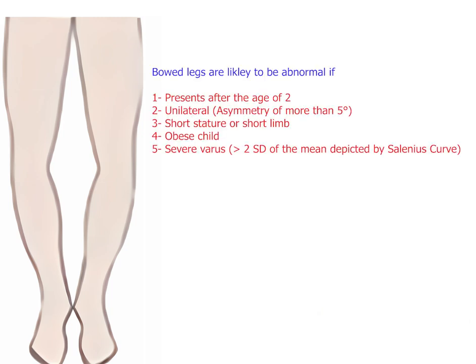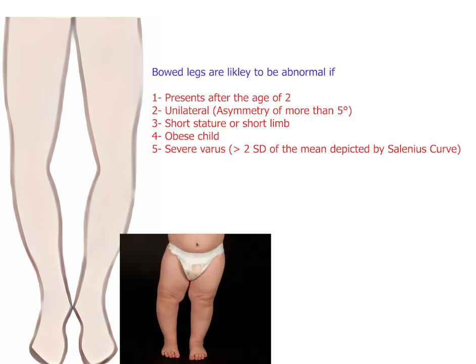The question is: when should parents — and indeed doctors — get worried about bow legs or knock knees? These are some rules of thumb. Bow legs are likely to be pathological if they persist after the age of two years. We know that by 18 months the legs should be straight, so persistence of bow legs after that should alert us that something may be wrong. Second, if it is unilateral — one side more than the other — as seen in this child's picture, that is also a concern.